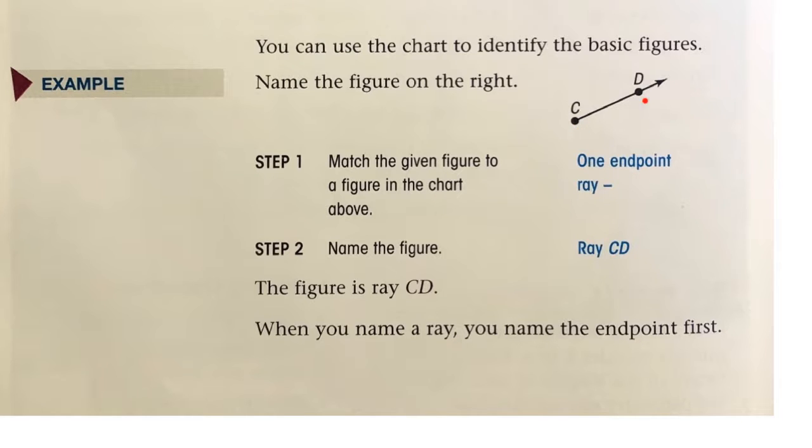There's an endpoint and it goes with the pointy. So, let's name the figure for step 2. It's a ray. The endpoint is C. And we have a D. So, the figure is ray CD.